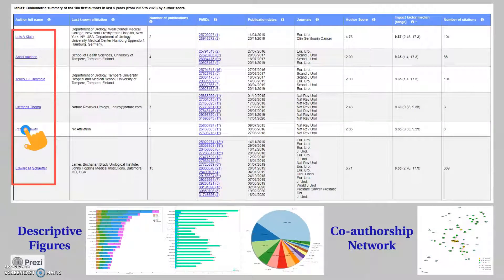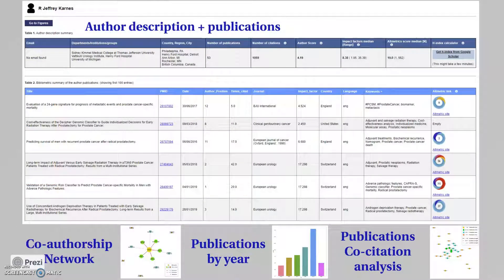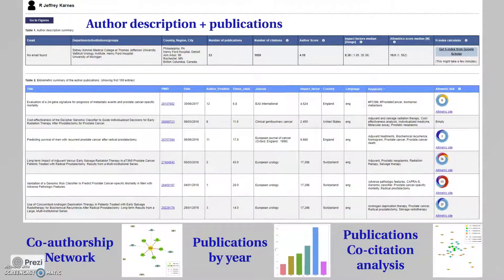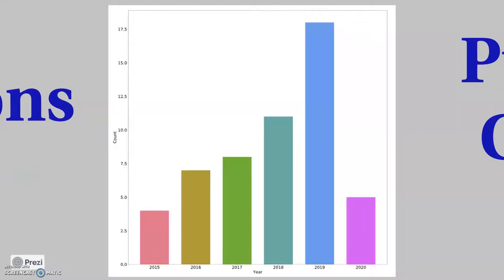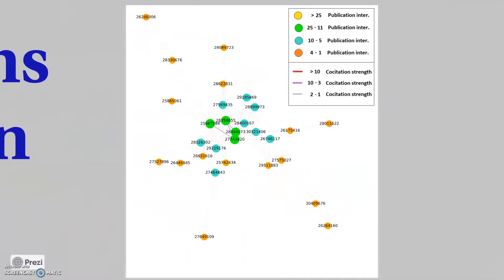Finally, if you click on one of the author names in the results table, an author profile will open in a separate window. Here you have a more detailed description of the individual author and their publications. The first table describes author performance using indicators such as number of citations, number of publications, and others. The second describes the author's publications. On the top right, there is a function that retrieves the h-index from Google Scholar. After the tables, there are three figures: an individual co-authorship network, the number of publications by year, and a co-citation analysis of the author's publications.